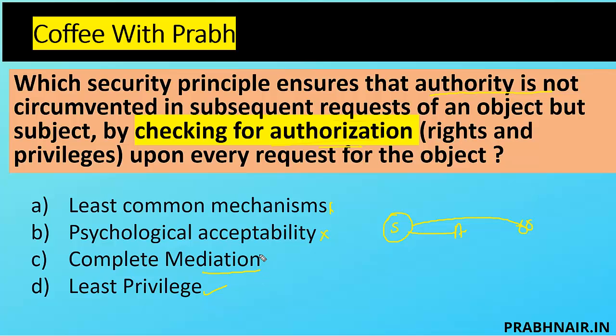One example: when you browse a banking website and your session is idle for 10 minutes, you must re-login and type your password again. That application follows the complete mediation principle, which ensures that for every access attempt, every access request, and any change in state, it must go through an authorization process. Another example is network topology: whenever any external user wants to access the enterprise, they must be authenticated through a bastion host. Without authenticating through the bastion host, they cannot access the enterprise network.